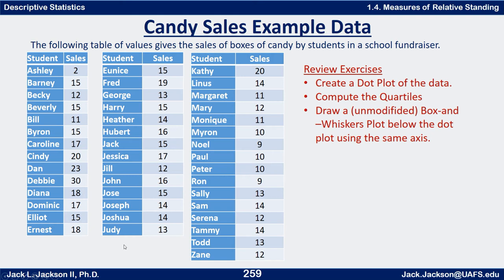Let's see if you've understood this and try to work through one on your own. We have the data set we've been looking at in earlier videos — a hypothetical class of students selling boxes of candy as a fundraiser. We've already computed a dot plot and quartiles and done an unmodified box-and-whiskers plot using the same axes before. Get out some graph paper, make your dot plot, compute the quartiles, draw the box-and-whiskers plot, and then we'll consider the outliers and add a modified box plot. Press pause now.